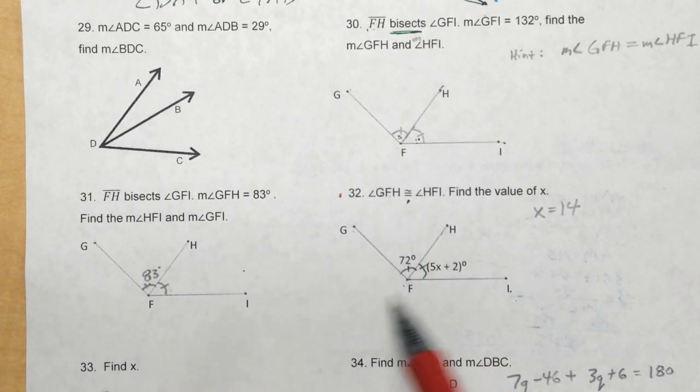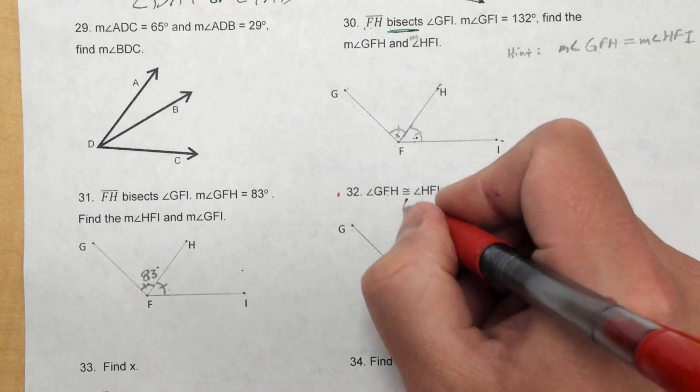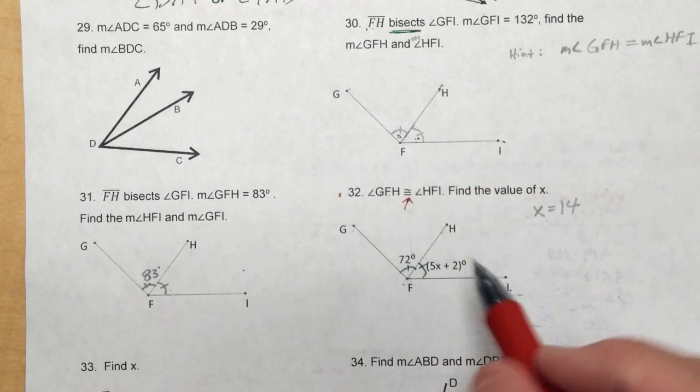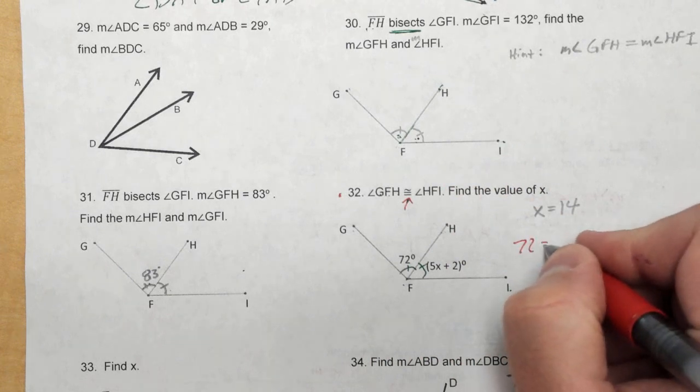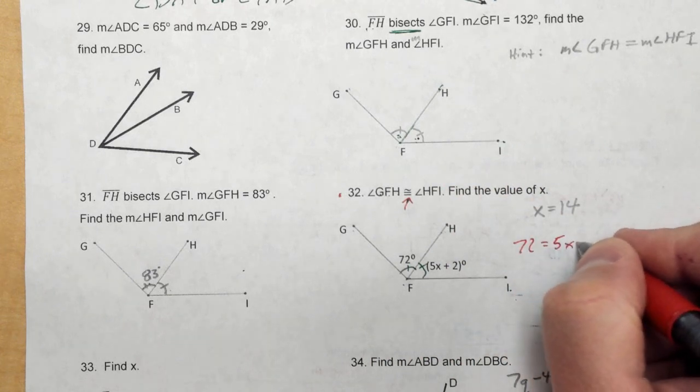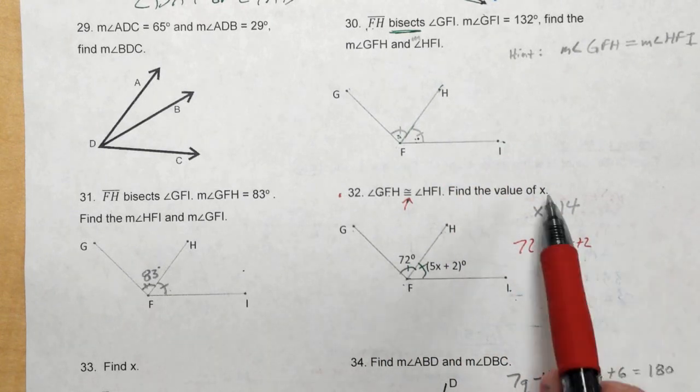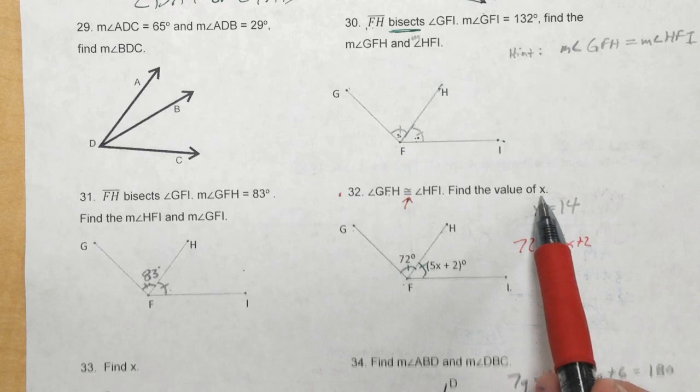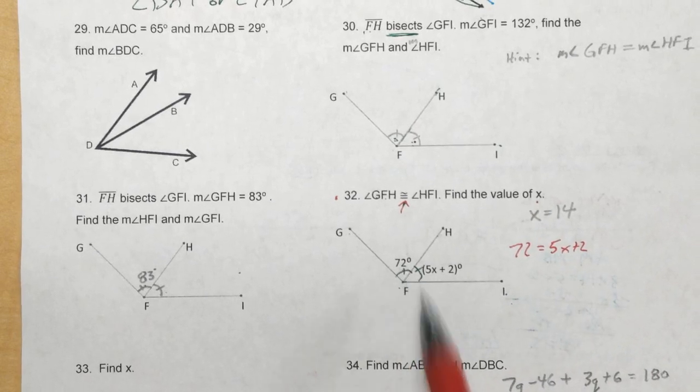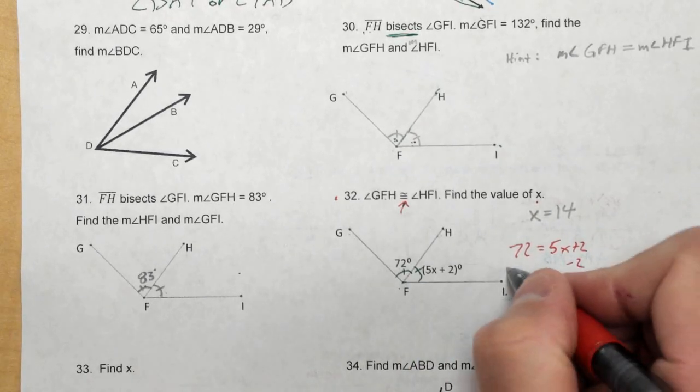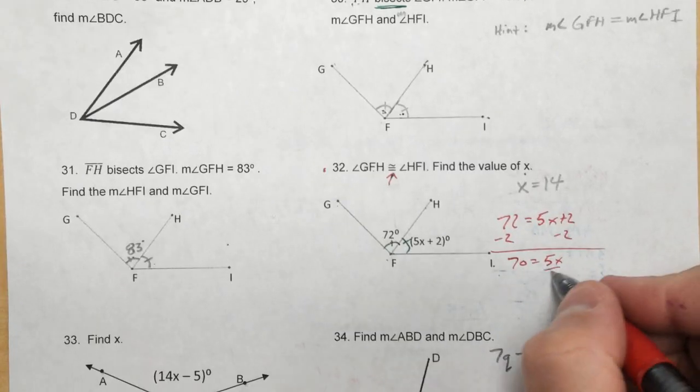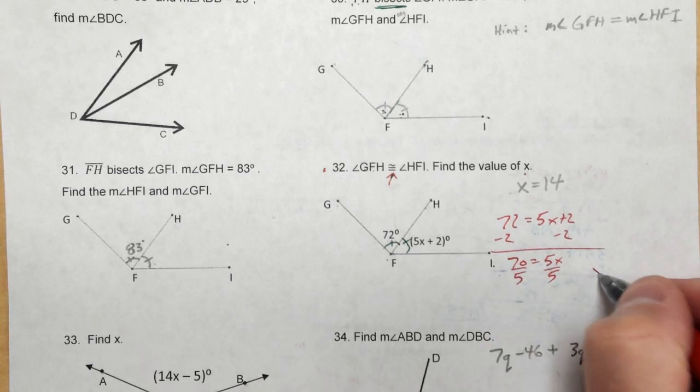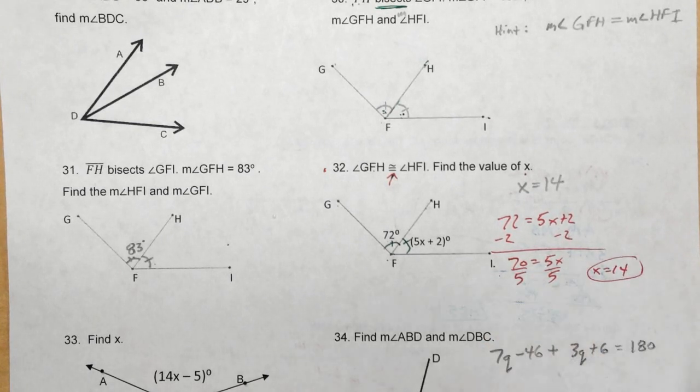So knowing that these are congruent though, because we basically have this angle that's been bisected. Since we know these are congruent, I can set 72 equal to 5x plus 2, to find x, which is what we're trying to do. So since I know those are equal, I can set them equal, and I'm just going to solve for x here. I get 70 equals 5x. Just divide by 5, and x is equal to 14. And that's how I got x is 14 here.